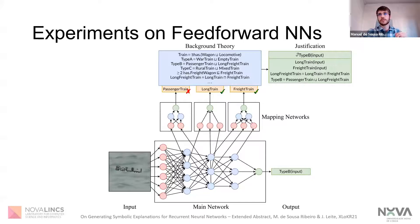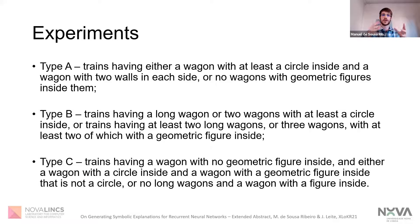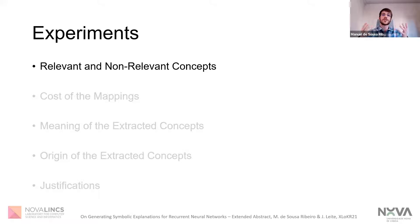Looking at this proposed method, we wondered what kind of results we might expect from it. We tested it on the X-train image dataset, which is composed of small images with representations of trains. We trained three different neural networks to identify trains with different visual features. For example, the first one identifies trains having either a wagon with at least a circle inside and a wagon with two walls on each side, or trains with no wagons with geometrical figures inside. The two remaining neural networks identify trains with different visual features. We then asked ourselves which concepts we would be able to extract via our mapping networks. We defined the notion of a relevant concept as one that is able to provide information regarding some output of our neural network.